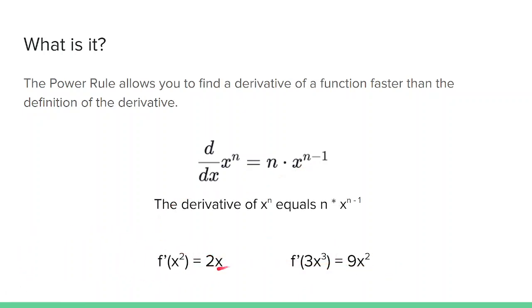Here are a few examples. For x squared, n equals 2, so you do 2 times x to the 2 minus 1. 2 minus 1 becomes 1, so you get 2 times x to the first, which is just 2x. For 3x cubed, it's 3 times 3x to the 3 minus 1. 3 minus 1 is 2, so 3 times 3x squared, which is 9x squared.